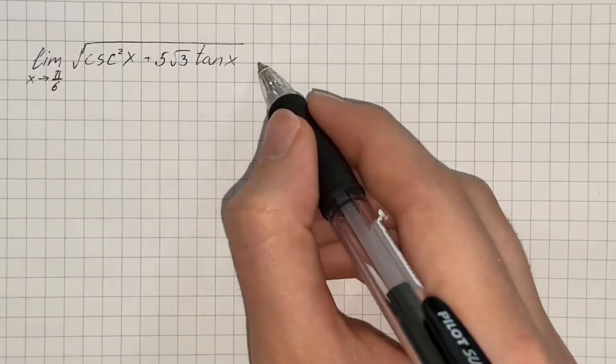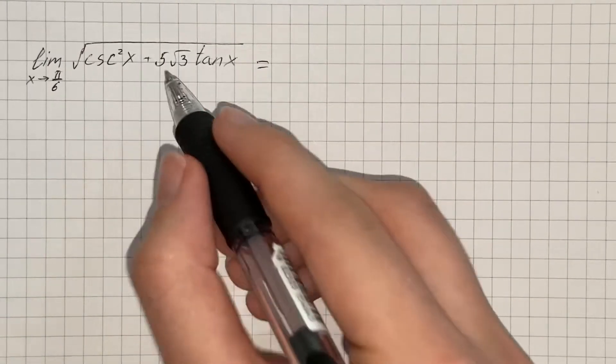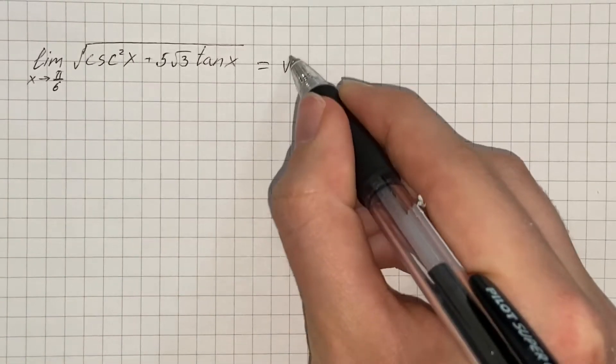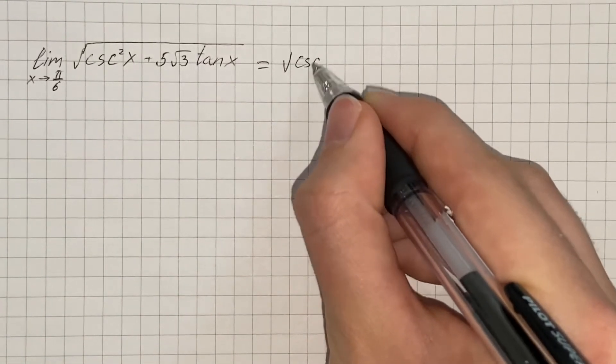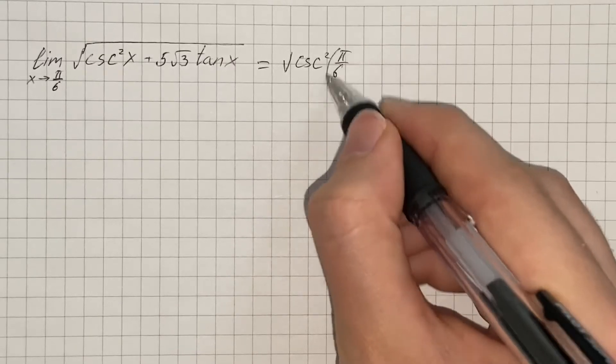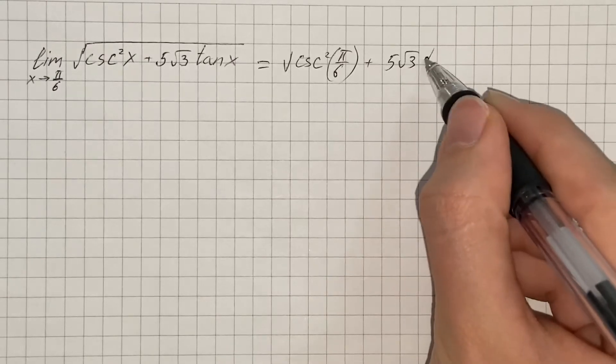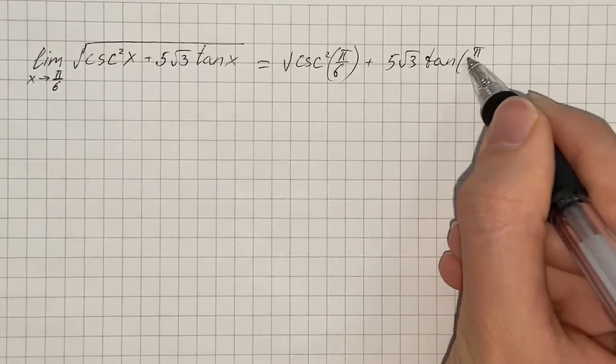We have to find the given limit and here we're going to use direct substitution. So we plug the value of x into the expression and we get square root of cosecant of π/6 plus 5√3 times tangent of π/6.